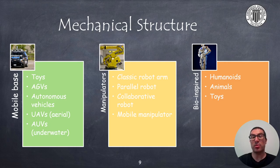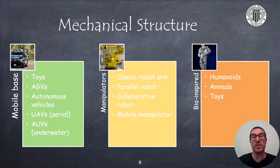Then we have classic anthropomorphic robot arms, as well as parallel robots and collaborative robots that are mainly used in the industry. There are also robots with a bio-inspired mechanical structure — that is, robots that look like humans or animals and try to mimic their mobility. These robots can easily move on uneven terrain and, in the case of humanoid robots, they can also use the same tools as humans without the need of adapting them.